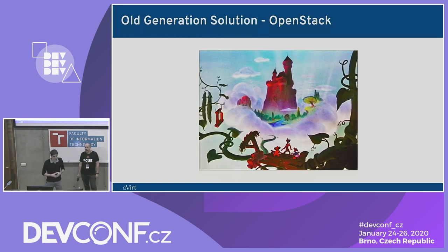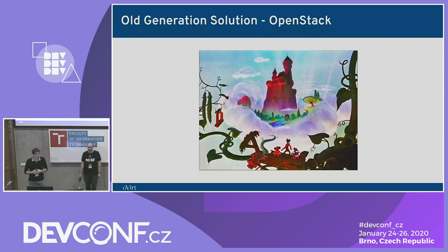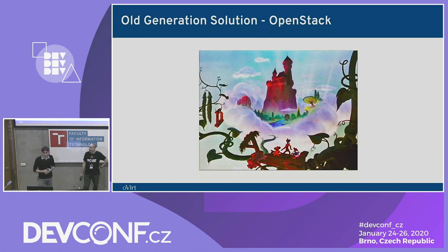Actually in Ovid we had that solution before — the old generation of Cinder integration. Cinder is a block storage component for OpenStack. It's currently deprecated and we are not supporting it in the new version due to some authentication changes in OpenStack. It also had limitations: in the old solution we supported only Ceph as a backend, and in order to use it you needed to create your own OpenStack environment.